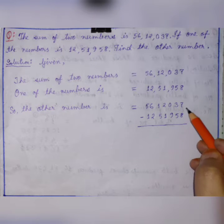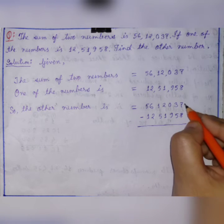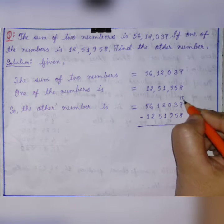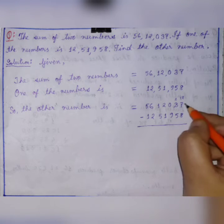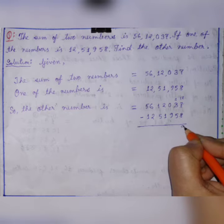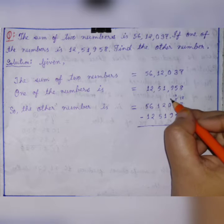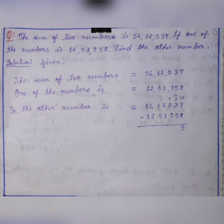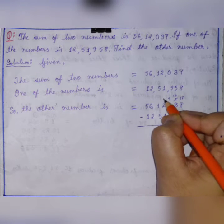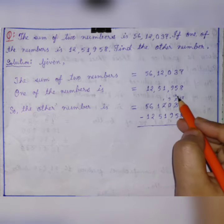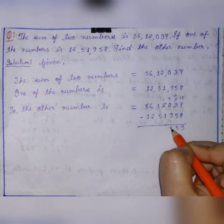We have to find the difference of these two numbers. From 7 we cannot subtract 8, so it will become 17; 17 minus 8 is 9. From 2 we cannot subtract 5 again, so this will become 10 and the next digit becomes 9. This 2 will become 1. Then 10 minus 5 is 5, and 9 minus 9 is 0.